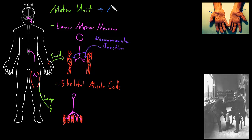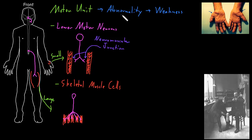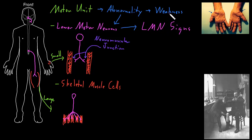A number of things can happen with any abnormality of the motor unit. One abnormality we could see is weakness, or loss of strength of contraction of skeletal muscle. Problems with other parts of the nervous system can also cause weakness, and we'll get into that in later videos. Abnormalities of the lower motor neurons specifically, in addition to potentially causing weakness, can cause several other changes called the lower motor neuron signs.